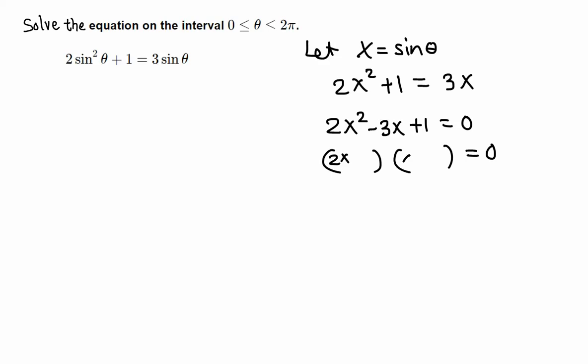So 2x² is 2x times x. +1 is 1 times 1. To get a plus sign we have to have same signs, either plus-plus or minus-minus. To get negative in the middle, minus-minus. If you FOIL these two factors you get this back. From this factor x equals 1, and from this factor 2x - 1 = 0, so x equals 1/2.